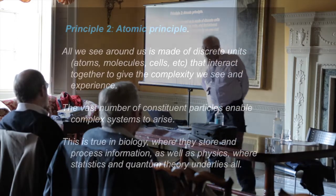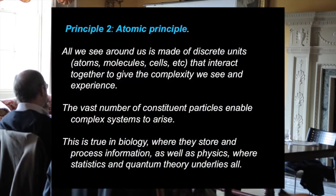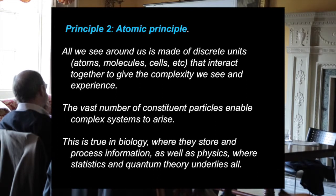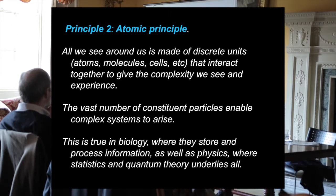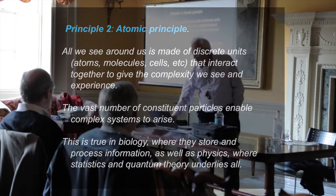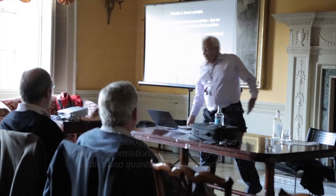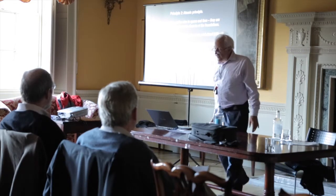The second principle is the atomic principle. All we see around us is made of discrete units — atoms, molecules, cells, and so on — that interact together to give the complexity we see and experience. The vast number of constituent particles enables complex systems to arise. The reason we can be so complex is because we're made of such incredible numbers of particles — 10 to the 13 cells interacting in the body, each cell with billions and billions of atoms. It's true in biology, where these particles store and process information, as well as in physics, where statistics and quantum theory underlie all.